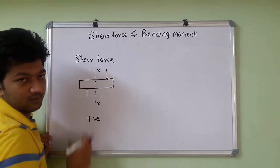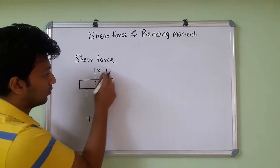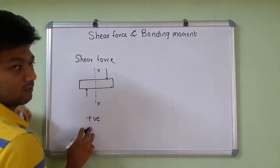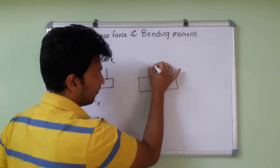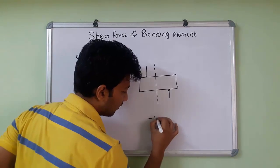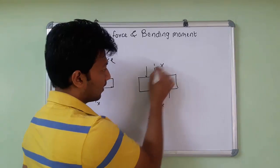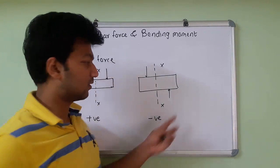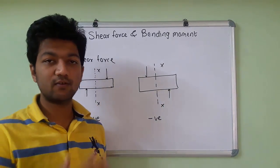If that force is in the downward direction, we consider it as negative. If we consider from right to left, and the right force is in the downward direction, we consider it as a positive one. So downward force on the left and upward force on the right — we consider the shear force as negative. How we use the sign convention, we will understand with the help of an example.